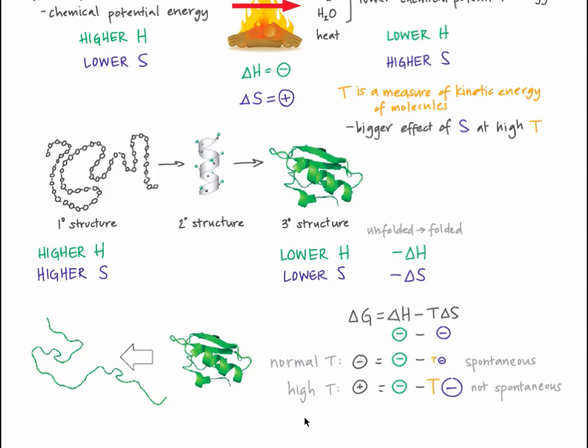One way to denature or unfold a protein is to heat it up. This increase in temperature gives the entropic term more weight in determining delta G. In other words, higher temperature favors the disordered state, even if it means breaking some favorable interactions or bonds. Because an unfolded protein is more disordered, heating up a protein is one way to unfold it, breaking those ionic and polar covalent bonds.